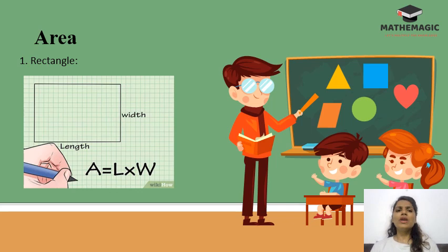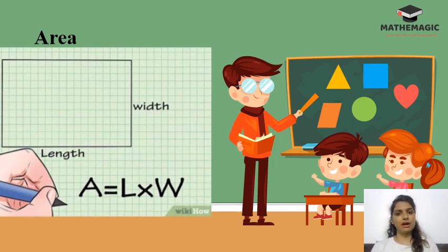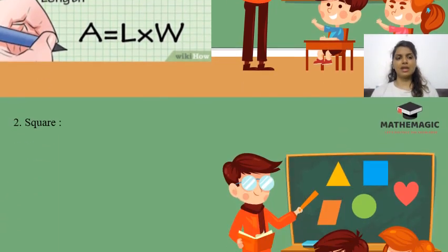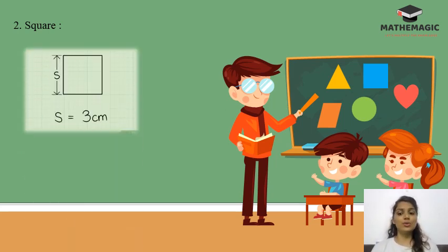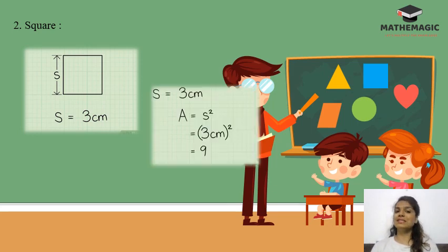Now let's look at area. Using a square paper activity, we can find that the area of a rectangle is its length multiplied by its breadth (or width). For a square, since all sides are equal, the formula is simply side × side.